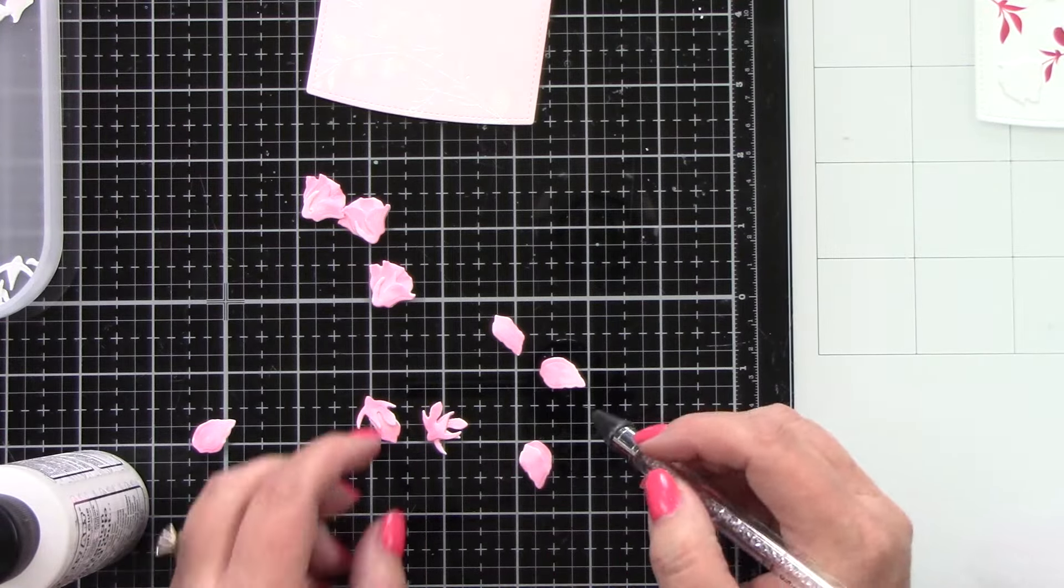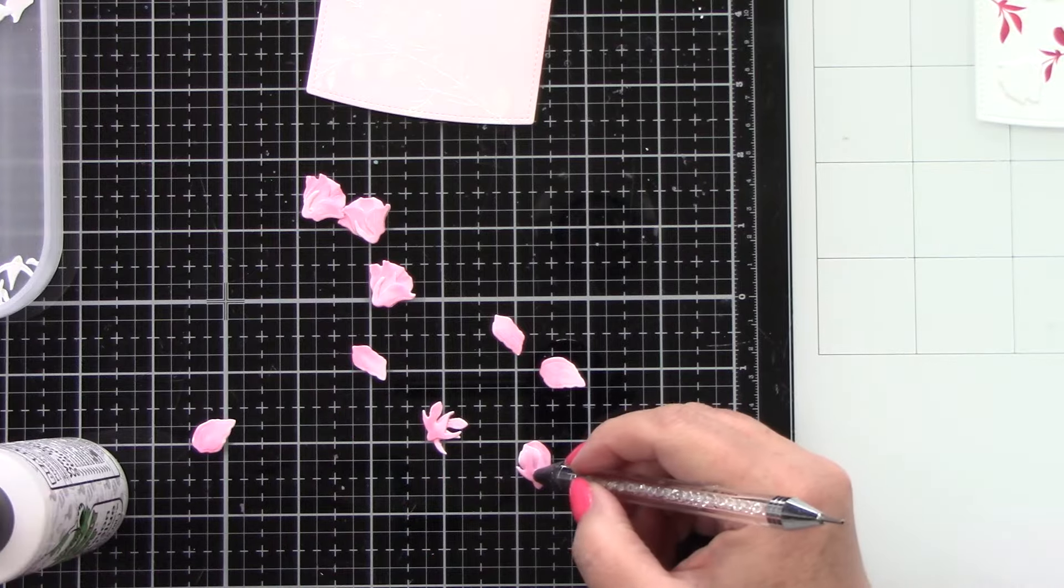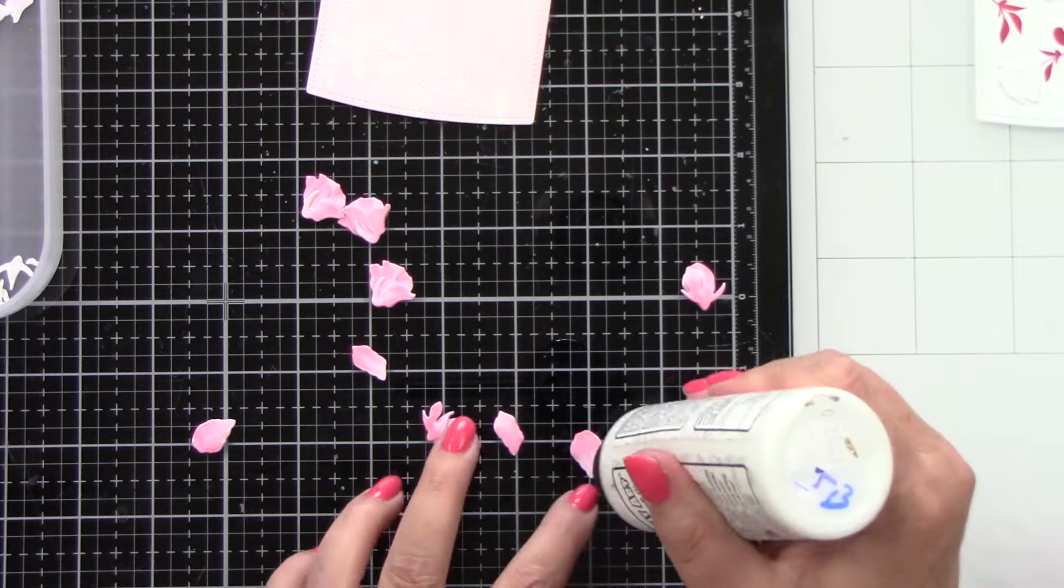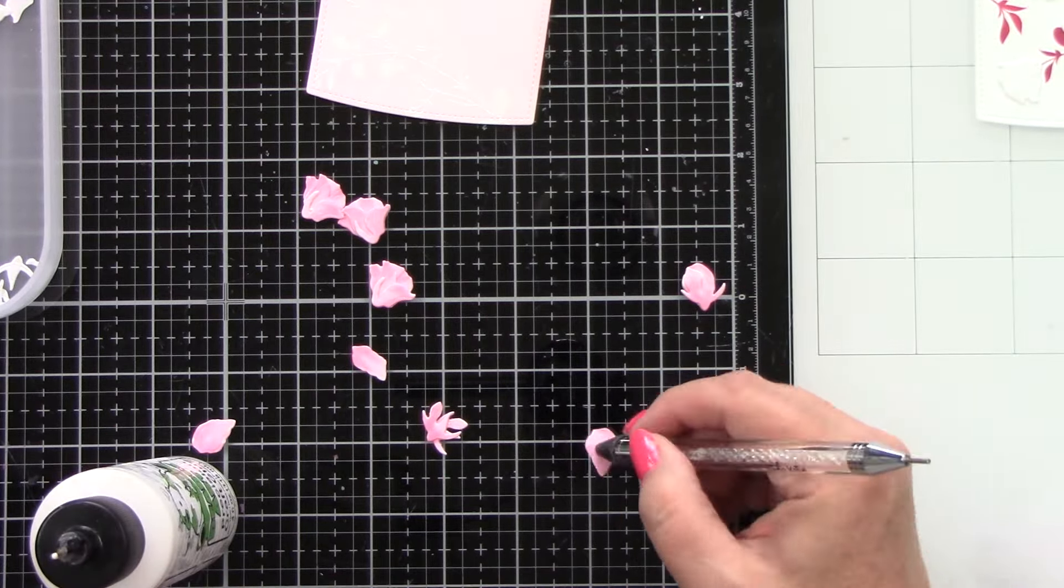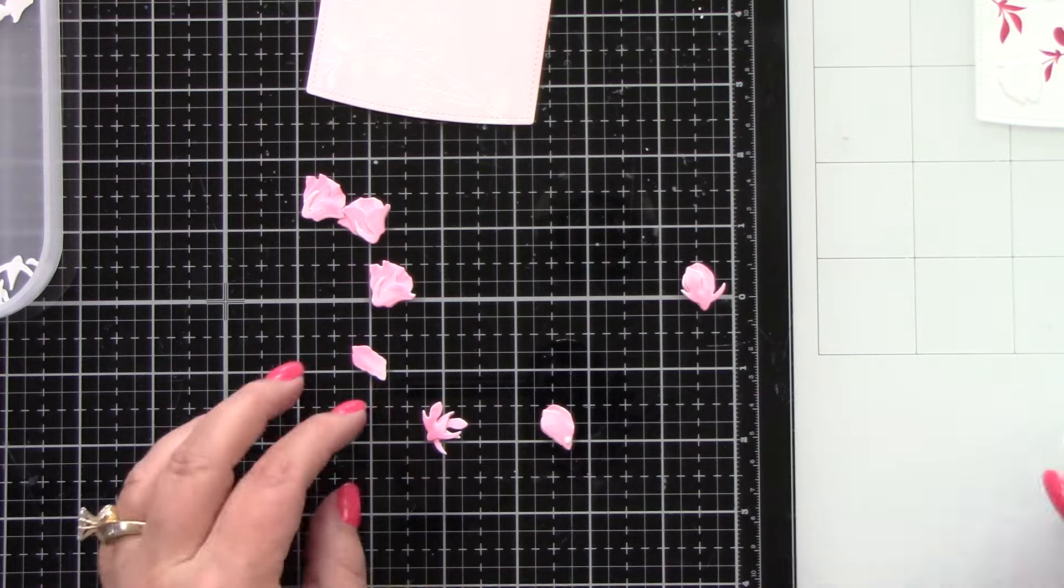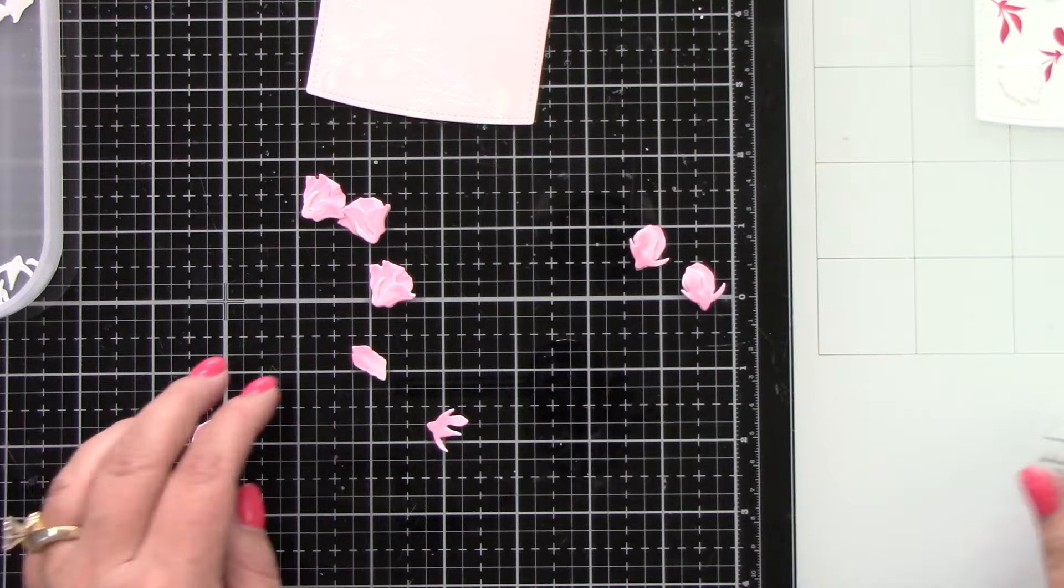Again, just adding a dot of glue, lining up on the edges. You can play with it ahead of time and kind of see where everything lines up, and also Honey Bee Stamps has little templates that you can see how these go together, which is really nice.